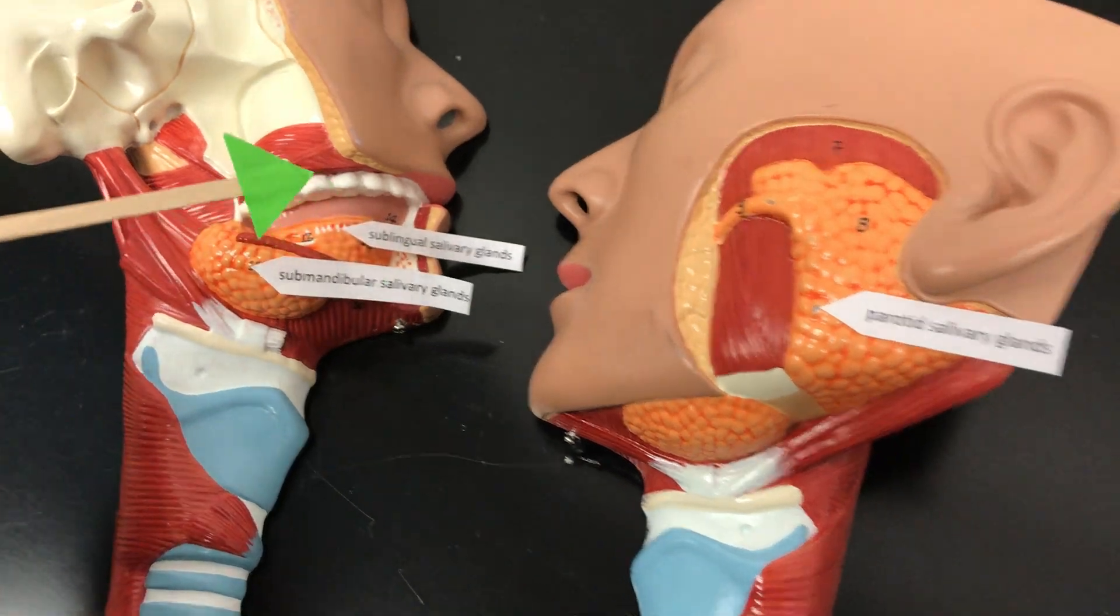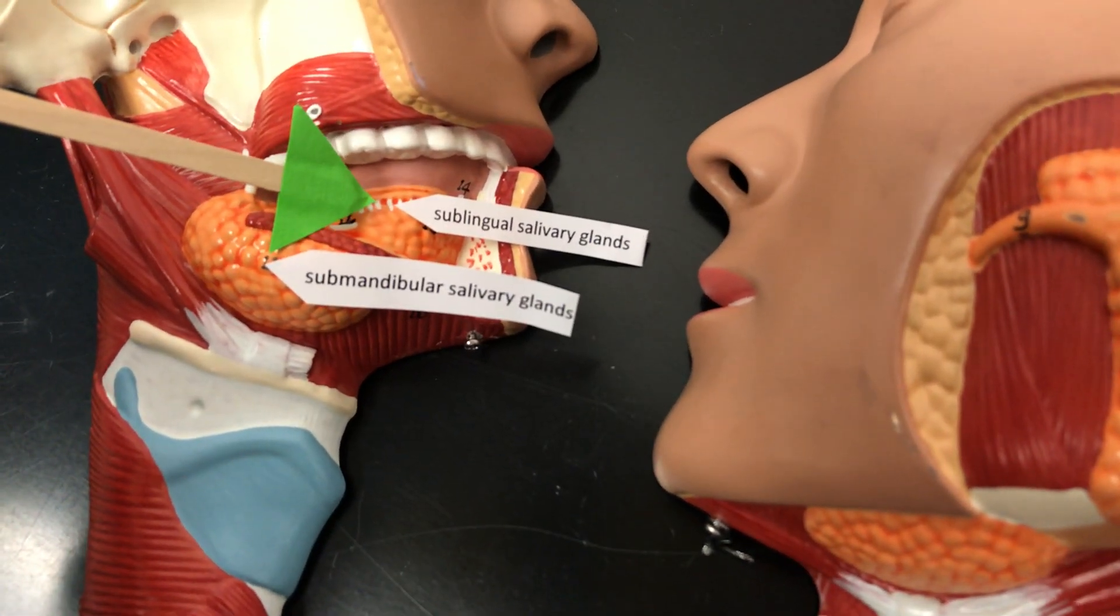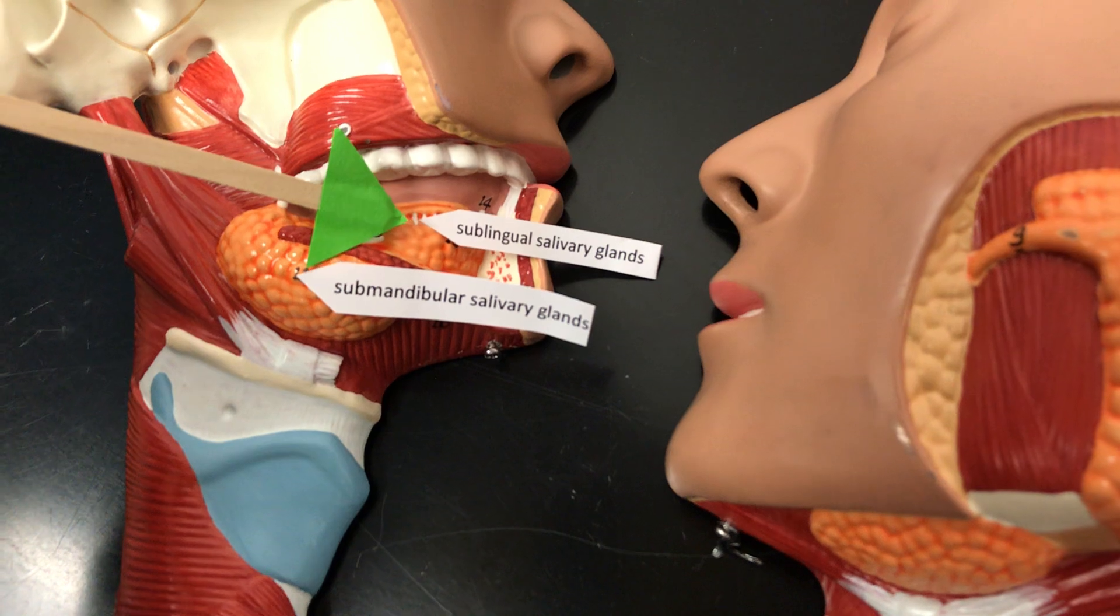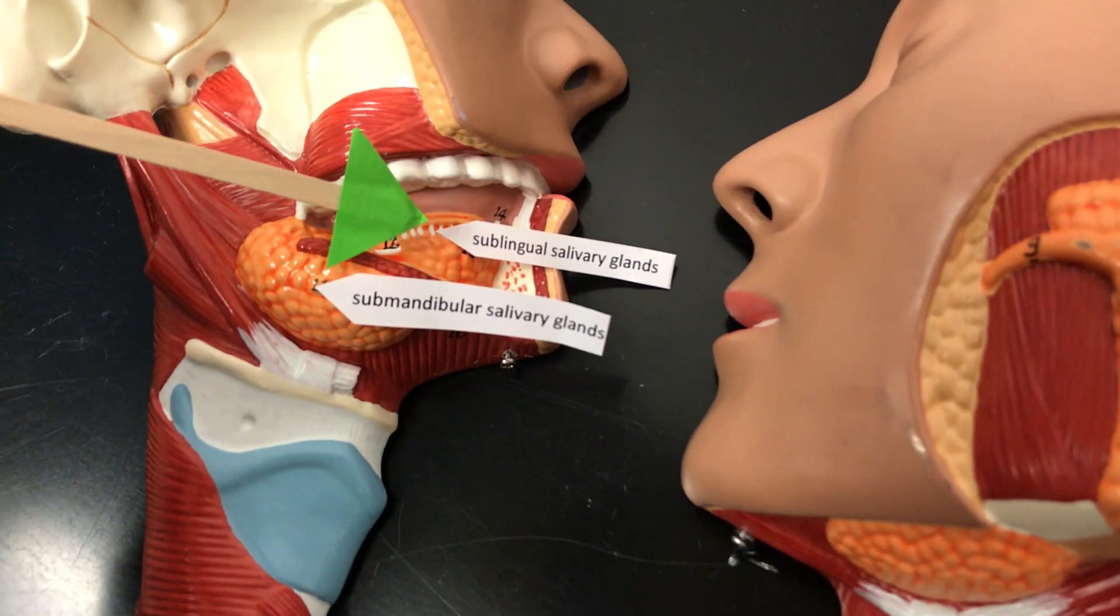Then we have the sublingual salivary glands. Sub tells you that they're underneath and lingual means tongue. So these are underneath the tongue.